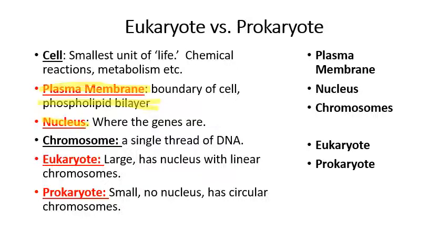Within the nucleus you will find chromosomes — in humans, 23 pairs of chromosomes. A genome is all the genes that a particular organism is supposed to have. The human genome consists of about 23,000 genes. Every organism has a unique genome — the human genome is different from the tiger genome, which is different from the worm genome, and so forth.